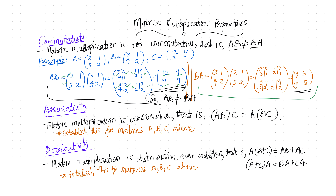Now computing B×A: B = [3,1; 4,2], A = [2,1; 3,2]. Element (1,1): 2×3 + 3×1 = 6 + 3 = 9. Element (1,2): 1×3 + 2×1 = 3 + 2 = 5. Element (2,1): 2×4 + 3×2 = 8 + 6 = 14. Element (2,2): 1×4 + 2×2 = 4 + 4 = 8. So B×A = [9, 5; 14, 8]. Since A×B = [10,4;17,7] ≠ B×A = [9,5;14,8], matrix multiplication is confirmed not commutative.